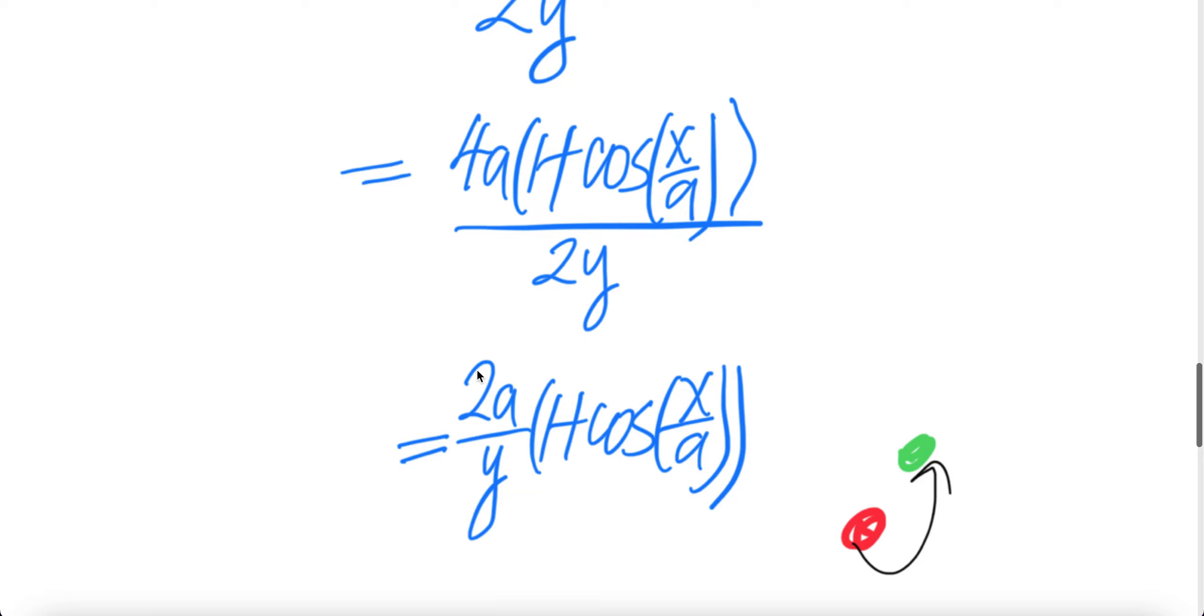2 and this cancel, you get 2a times 1 plus cos 1 over a x divided by y. Done.